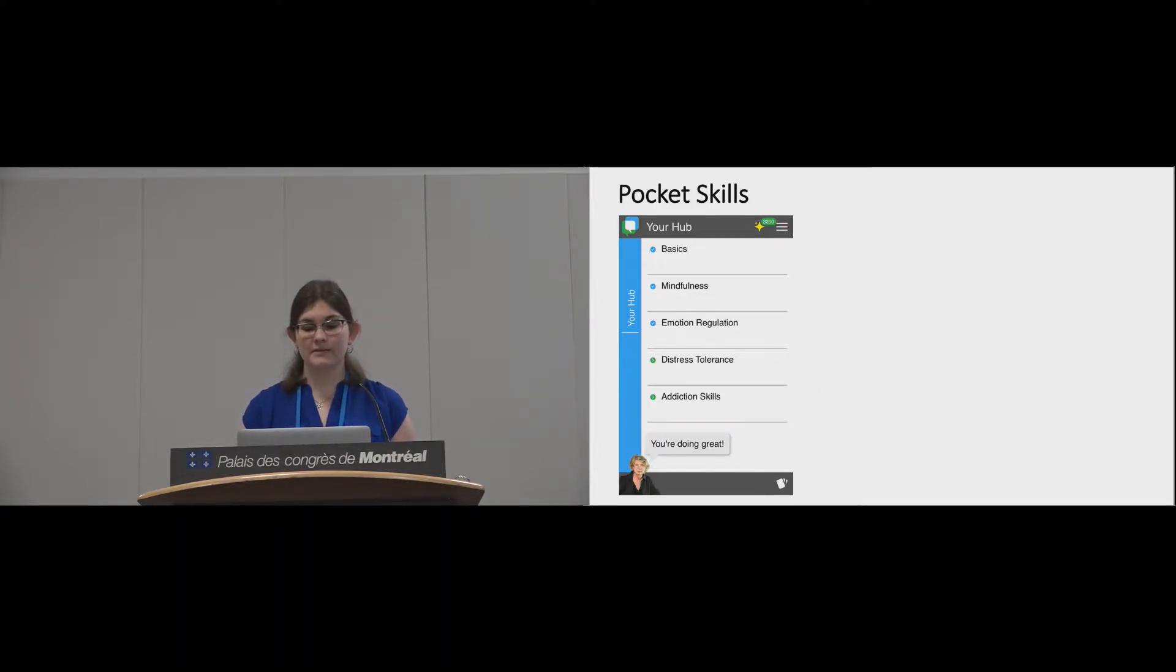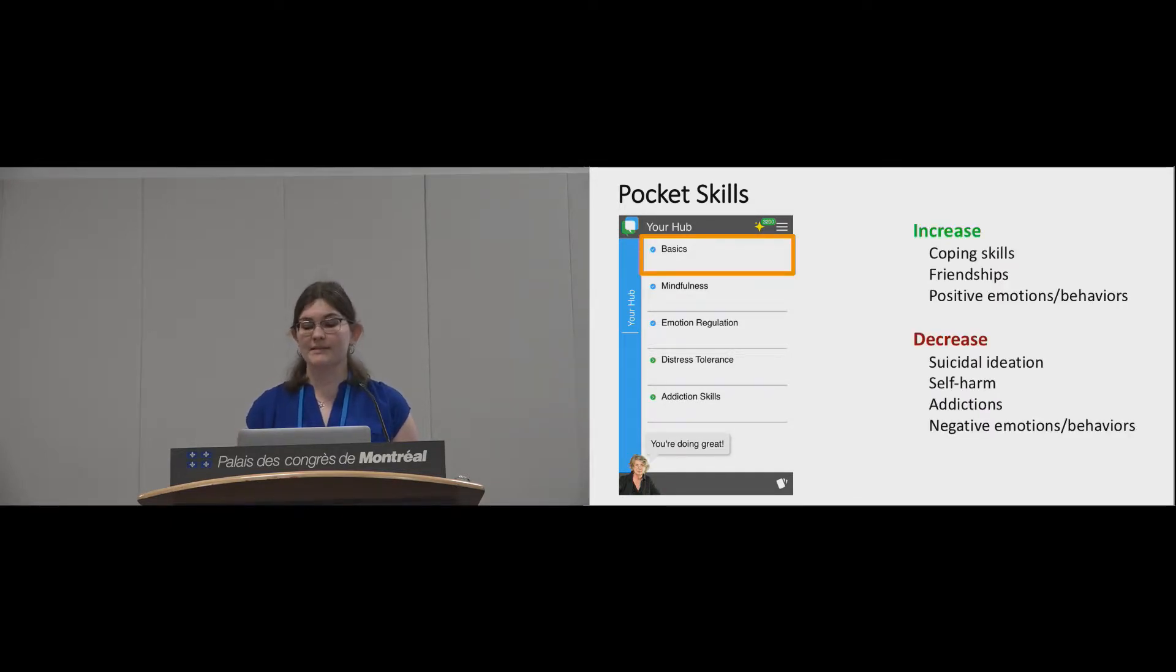When people open PocketSkills, they see this homepage or hub which displays the supported DBT modules. The basic section introduces people to DBT and helps them set their overall DBT goals, which may include things like increasing coping skills, friendships, and positive emotions and behaviors, and decreasing suicidal ideation, self-harm addictions, and other negative emotions and behaviors.